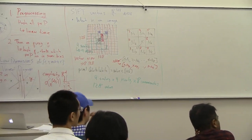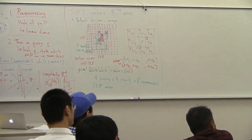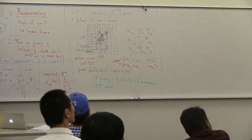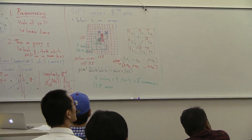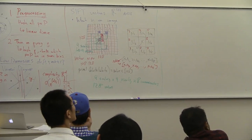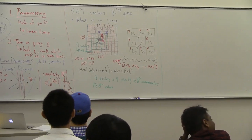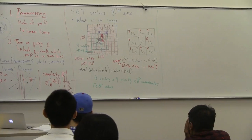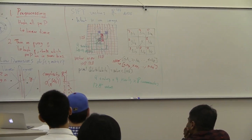Another example: Walmart famously had an analysis where they found that people buy beer and diapers together. They were analyzing receipts as vectors where you had a value for every product they sold. We'll actually have a lecture later on frequent item sets, where we'll talk about the algorithms they use for that.